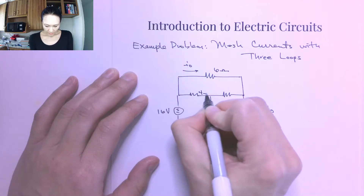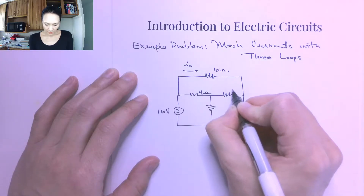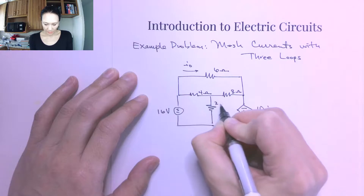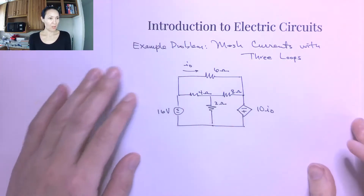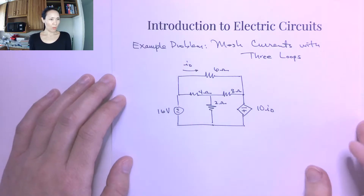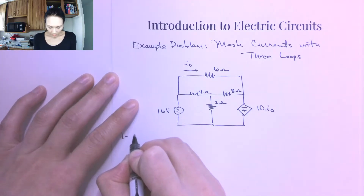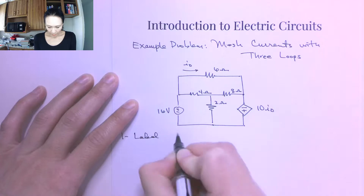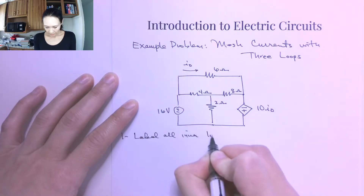This one is a 4 ohm resistor, this one is an 8 ohm resistor, and this one will be a 2 ohm resistor. So here's our circuit. Step number one for the mesh current method is we want to label all inner loops.